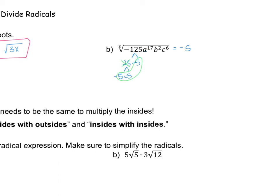Next is a cube root with variables. For a to the 17th power: 3 goes into 17 five times (3×5=15), so a to the 5th comes out, with a remainder of 2. So a squared goes back inside the cube root. For b squared: 3 doesn't go into 2, so b squared stays inside the root. For c to the 6th: 3 divides into 6 twice, so c squared comes out with nothing left over. That's the final answer.